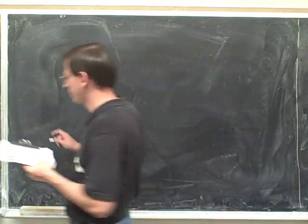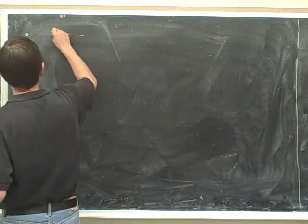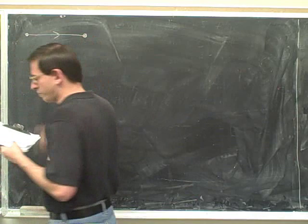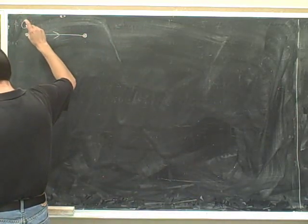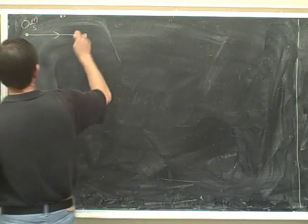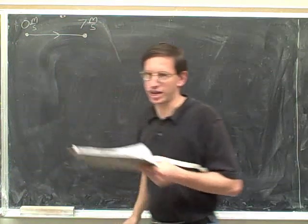Step one, draw the path. Simple one-dimensional path. We can indicate that we're starting at 0 meters per second and reaching a speed of 7 meters per second.